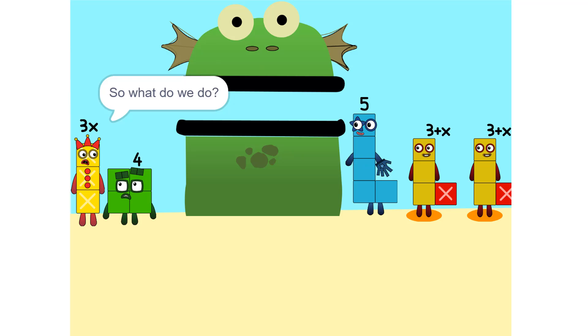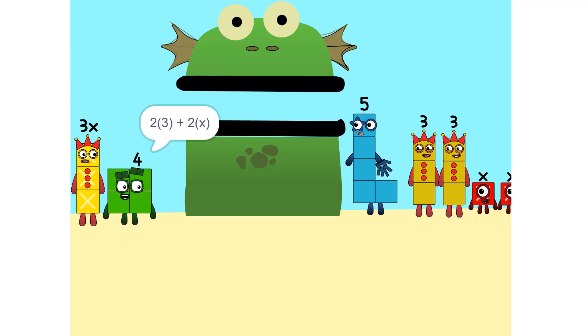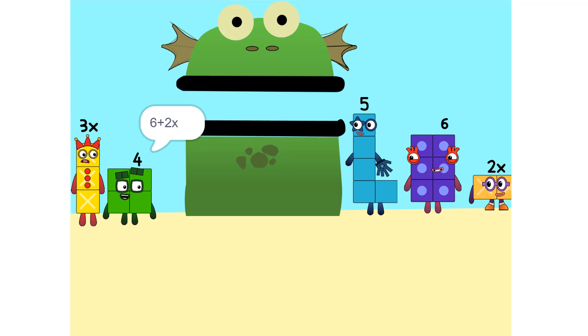So what do we do? Okay, see the 2 times 3 plus x? That's the same as 2 times 3 plus 2 times x, which is 6 plus 2x. Oh.